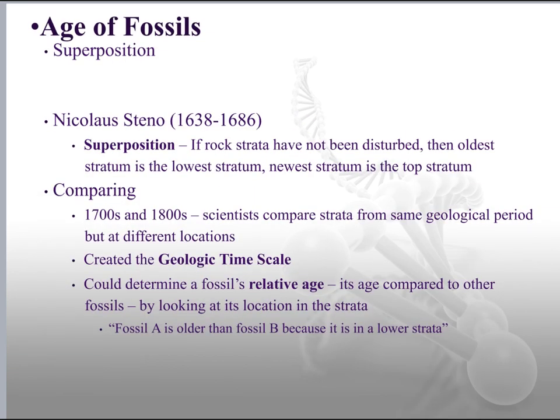Talking about fossils and superposition — this goes back to what we covered in the first section. A man named Nicolaus Steno, who lived in the 1600s, introduced the idea of superposition: if rock strata have not been disturbed, then the oldest stratum is the lowest one and the newest stratum is the top. So we can tell relative age just by where something falls in the layers of rock.